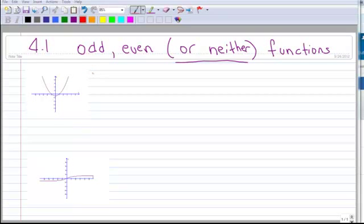Okay, this lesson is on odd and even functions. I've written up here 'or neither' because if a function is neither odd nor even, then we would consider that neither. It doesn't have to be odd or even. This first example that I've written up here is an example of an even function.